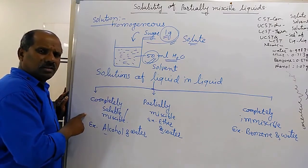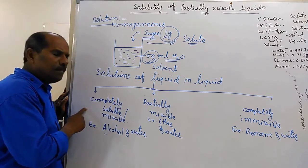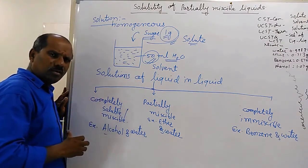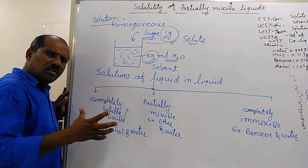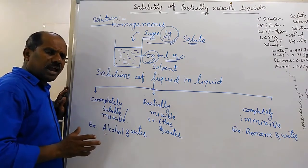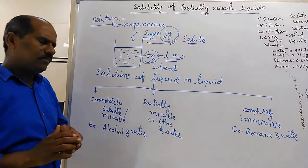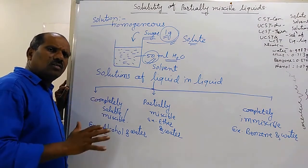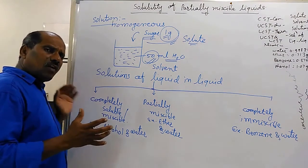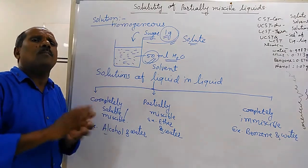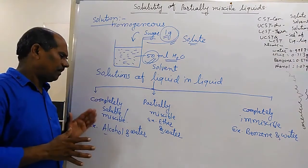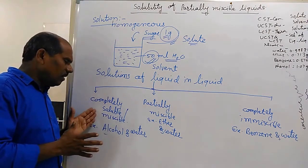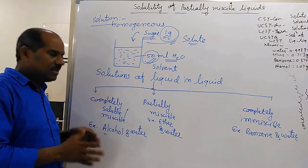The first type is liquids which are completely miscible. For example, alcohol and water. Whenever we take alcohol and water in equal proportions and mix them vigorously in a beaker, then on standing or keeping on stable ground after some time, it will form a homogeneous and uniform single phase only. We can say that type of liquids are completely miscible liquids.